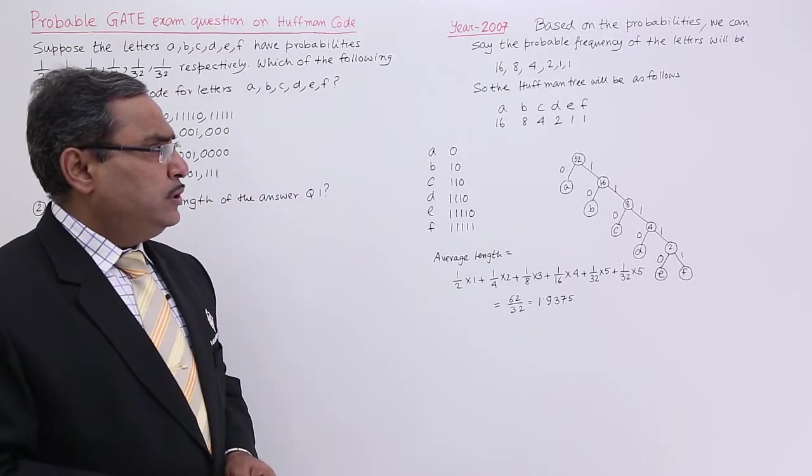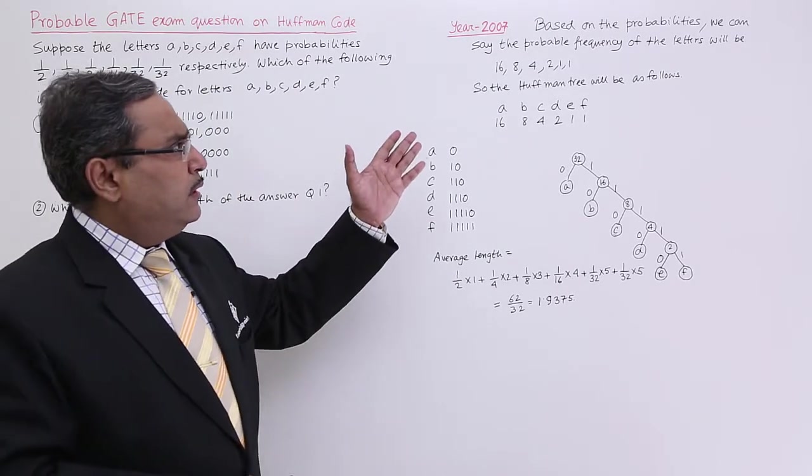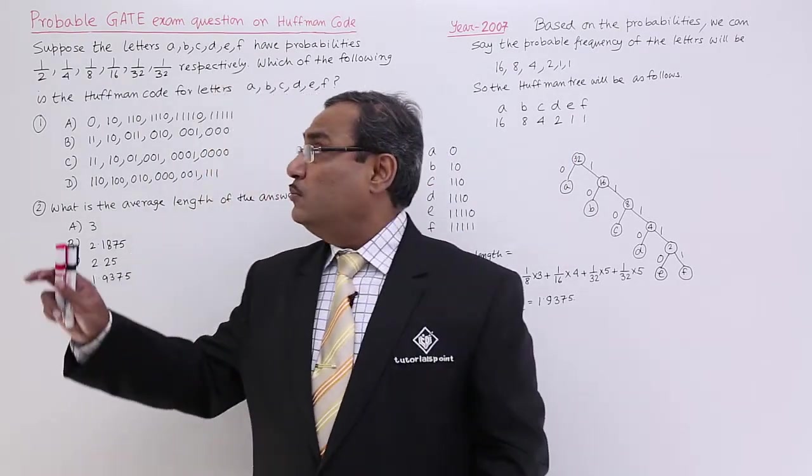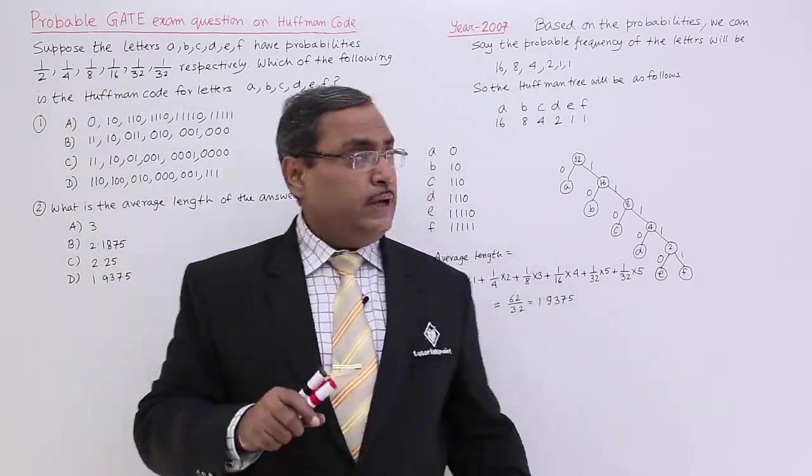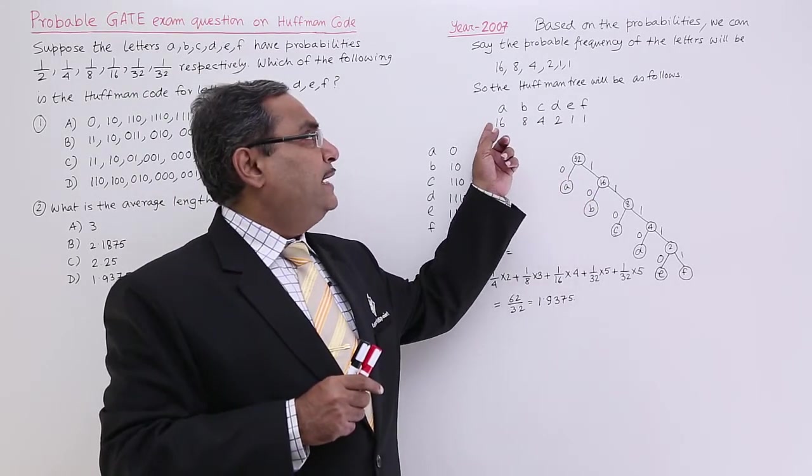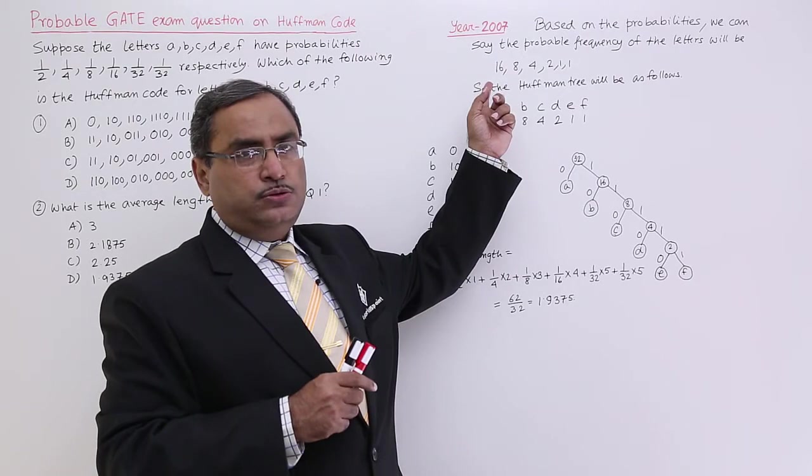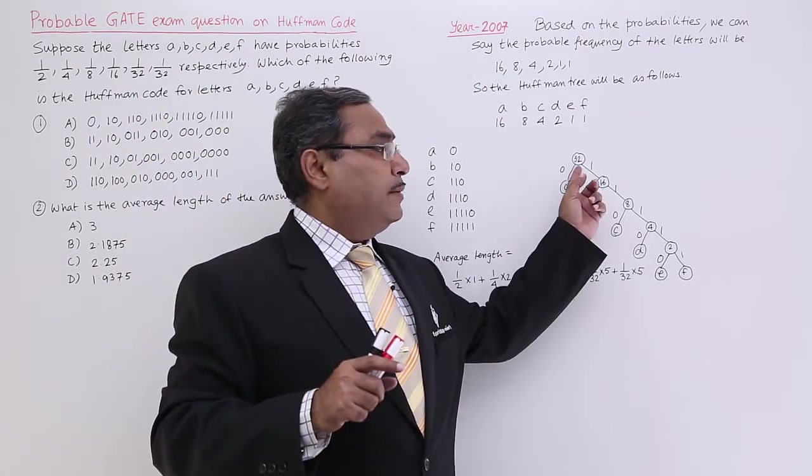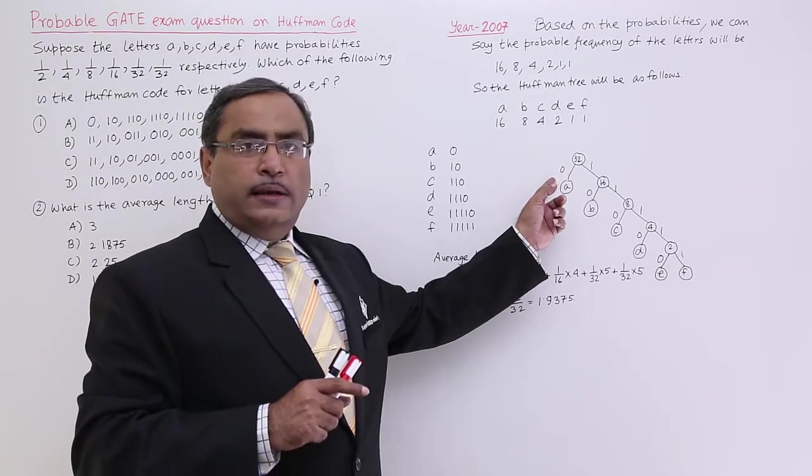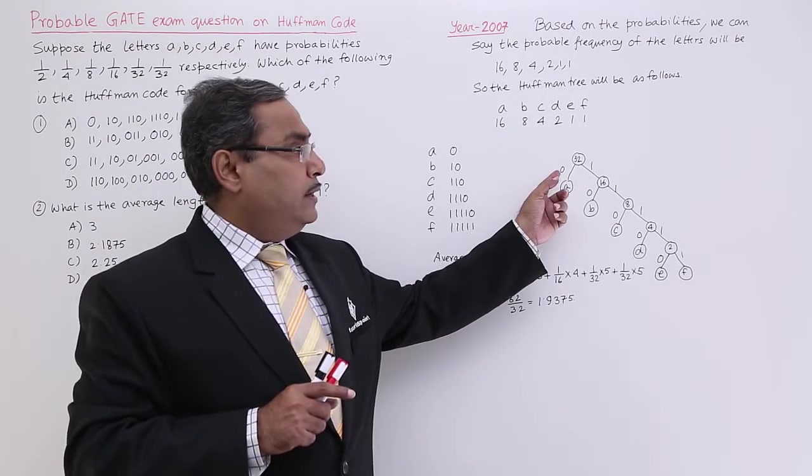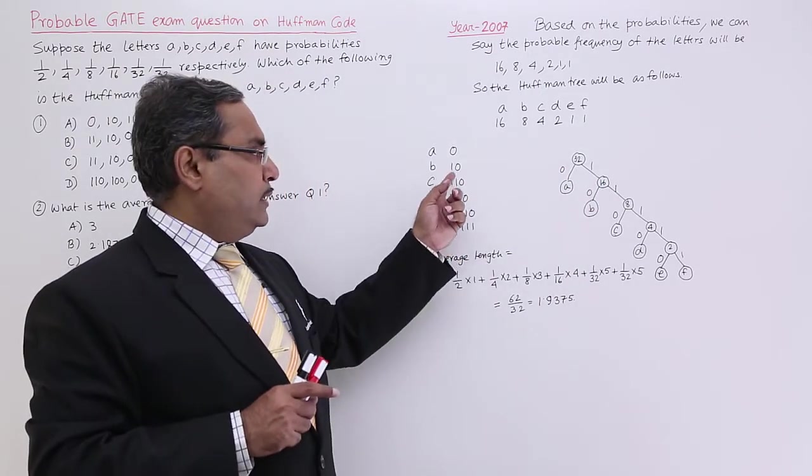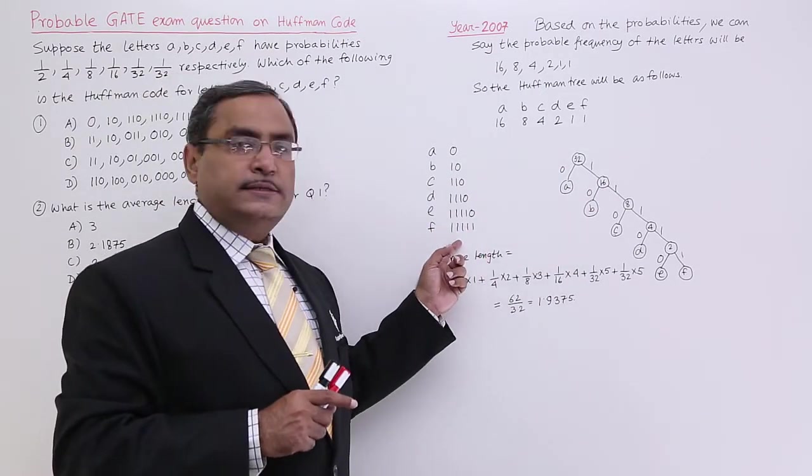If we deal with the problem with the original values here 1 by 2, 1 by 4 in this way, then the probability sum will be coming here 1. But as I did multiplication by 32 to each of these values, that is why the sum is coming as 32. Now we know that left edge will be labeled as 0 and the right edge will be labeled as 1. In this way the codes have got obtained.